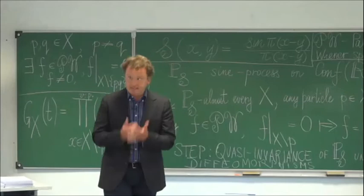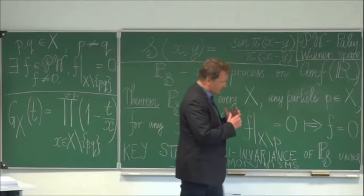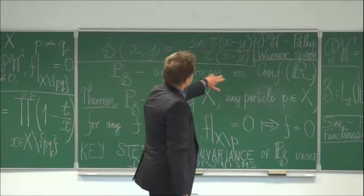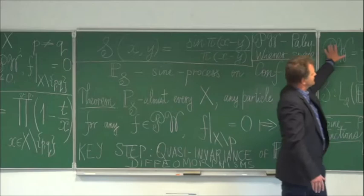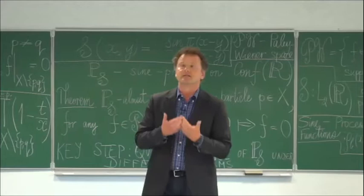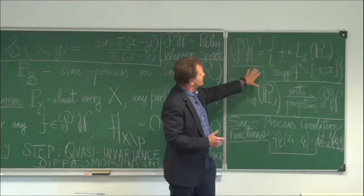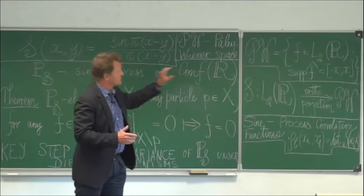We start with the key point process of random matrix theory, the sine process. This is the sine kernel on the blackboard. The sine kernel corresponds to the projection on the Paley-Wiener space, whose definition is recalled here: the Paley-Wiener space of functions whose Fourier transform has support on the interval minus pi to pi. This is the orthogonal projection, and it will be important that this operator is a spectral projection.